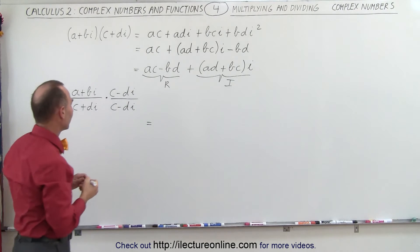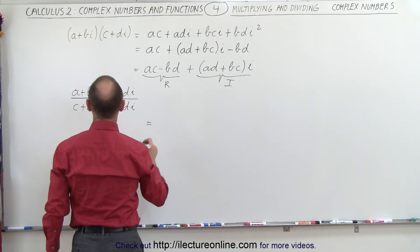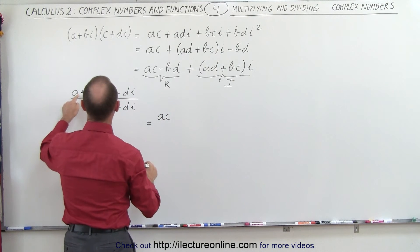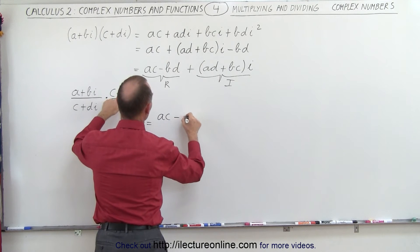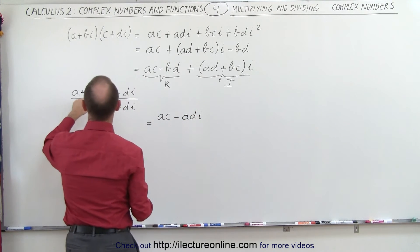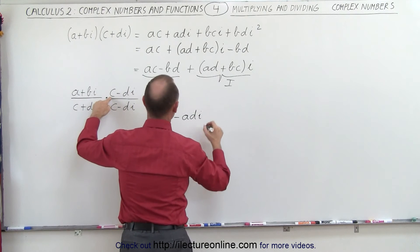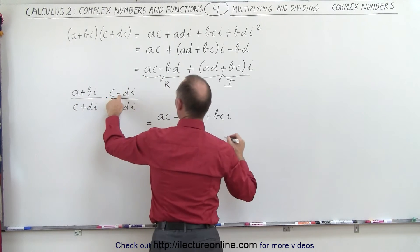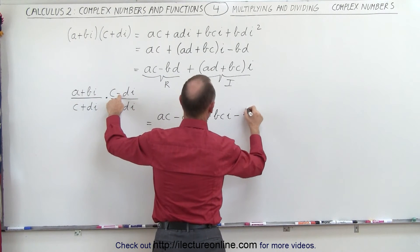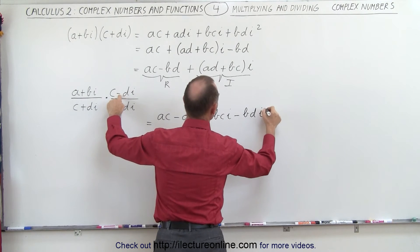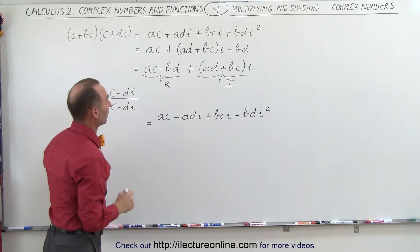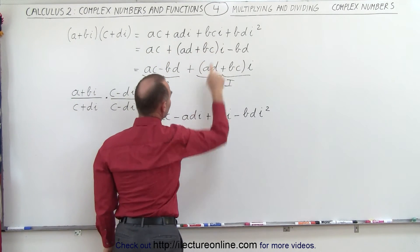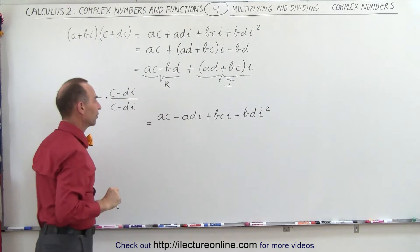Let's multiply the two complex numbers in the numerator. A times C, plus A times negative D·i becomes minus A·D·i. B·i times C becomes plus B·C·i. And B·i times negative D·i gives minus B·D·i-squared. Notice we have the same A·C, A·D, B·C, and B·D terms — just with different signs because of the negative sign from the conjugate.